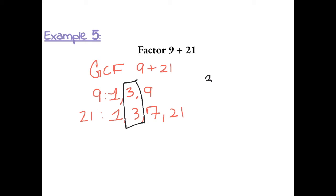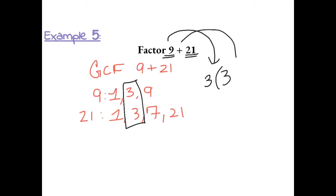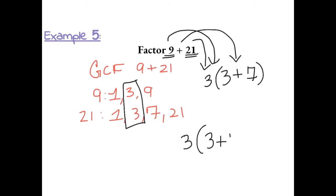So we want to divide out a 3 from 9 and 21, and we're going to put the 3 on the outside of the parentheses. 9 divided by 3 gives us 3, bring over your symbol — plus — 21 divided by 3 gives us 7. So the factored form of 9 plus 21 is 3 times the sum of 3 plus 7.